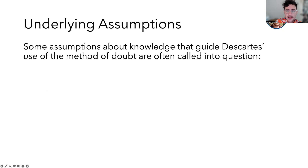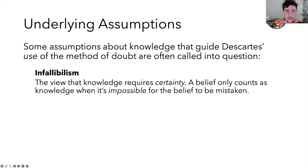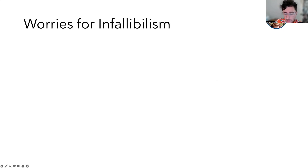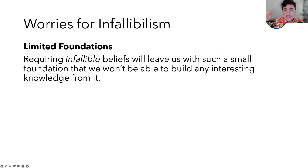The way Descartes uses this method seems to be guided by certain assumptions about knowledge, and some of those assumptions might be called into question. One of those assumptions is what we might call infallibilism — the view that knowledge requires certainty. A belief will only count as knowledge if it's impossible for the belief to be mistaken. If you have this view, the method of doubt makes sense because he's looking for a way that his belief might be mistaken. If you can find a way that your belief might be mistaken, that means the belief is not infallible, and so that would be a good reason to withhold belief and say you don't actually know it. One worry for this guiding assumption is that requiring certainty is going to lead us to so little knowledge that we won't be able to build anything interesting on it, because barely anything is going to meet this super high bar of certainty.